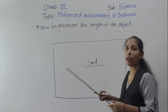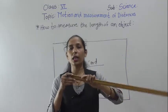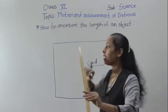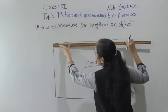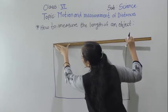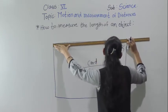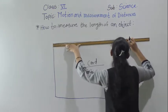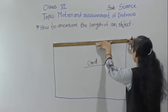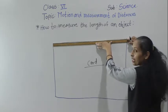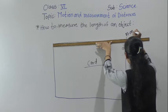To measure the length of an object, we have to keep the scale so that the zero point coincides with the left side of the object. See here, I have kept the zero point exactly at the left point. To measure the length, we have to read the scale division coinciding with the right side, and here the right side reading is 77 centimeters.